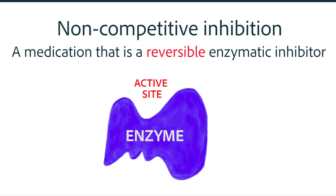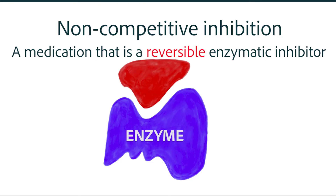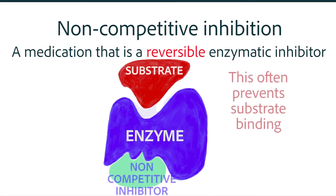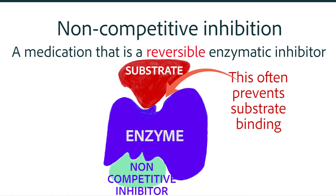The other major type of reversible inhibitors that is fairly common is the non-competitive inhibitor. In that case, the inhibitor binds to what we call an allosteric site — not the site that's in the active portion of the enzyme, but a different portion of the enzyme. This diagram denotes a non-competitive inhibitor changing the active site so that the substrate cannot bind.